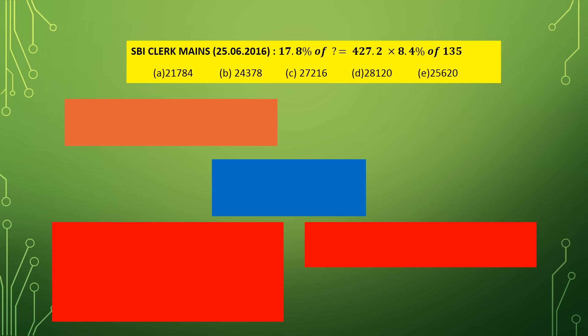This is a very important question with lots of computation; it was asked in SBI Clerk Mains 2016. Let us solve the right-hand side first. We have to calculate 8.4% of 135, approximated as 8.5%, which can be calculated as 10% of 135 minus 1.5% of 135. 10% of 135 equals 13.5. 1.5% of 135 equals 1% of 135 plus half of that: 1.35 plus 0.675, so it is approximately 13.5 minus 2 equals 11.5.